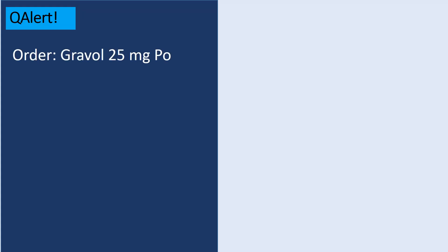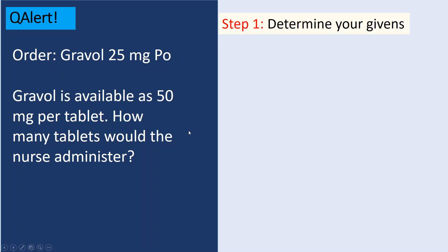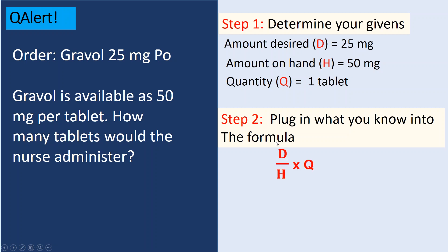Let's take an example. There is an order for Gravol 25 milligram taken by mouth orally. Gravol is available as 50 milligrams per tablet. How many tablets would the nurse administer? Step one: determine what is given. The desired amount is 25 milligrams; the amount on hand is 50 milligrams; and the quantity is 1 tablet.